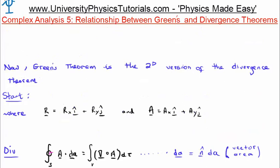I suggest to you that Green's theorem is the two-dimensional version of the divergence theorem. In order to do this we're going to manipulate each of the theorems but using a different vector field, and later we will see if the two vector fields turn out to be equal. So let's say we're dealing with the vector field capital R in two dimensions: R_x î plus R_y ĵ, and the vector field capital A which is A_x î plus A_y ĵ.